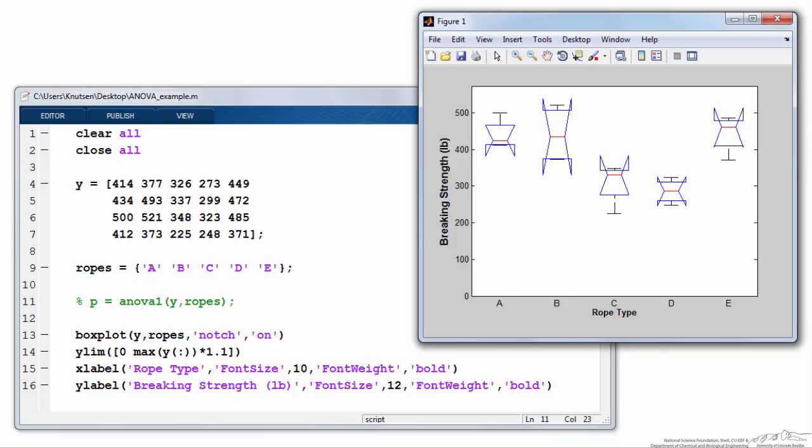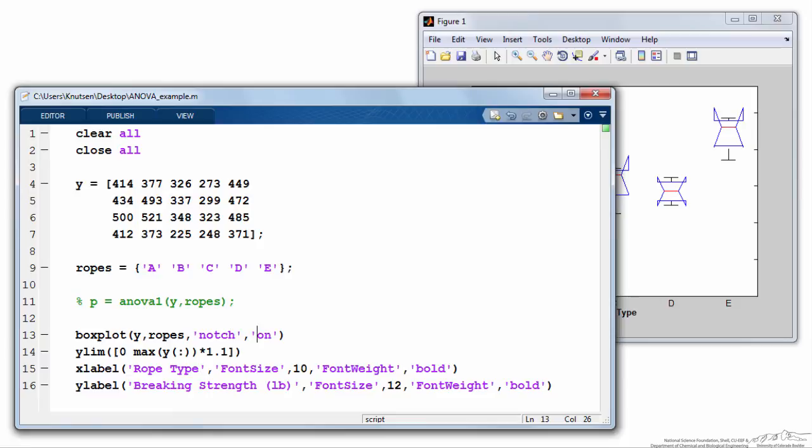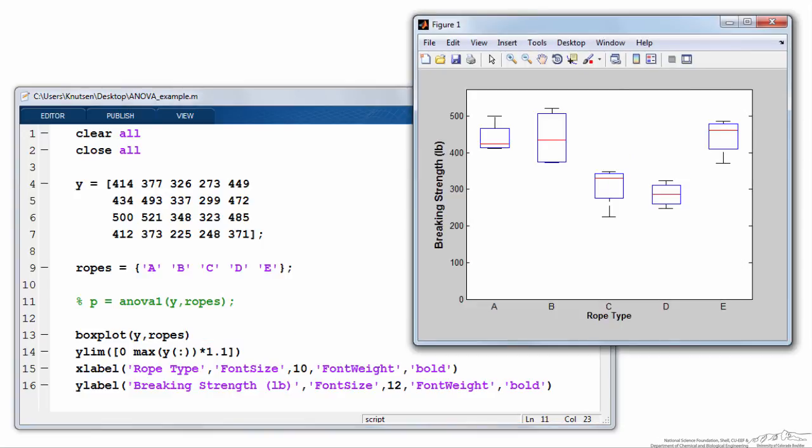To get rid of the notches, I can turn it off, or by default the notches aren't there in the first place with a box plot. When I run it, I get traditional box plots. The whiskers represent the minimum and maximum values, and the lower and upper part of the box represents the 25th and 75th percentile, and the red lines represent the median for each of the five ropes.